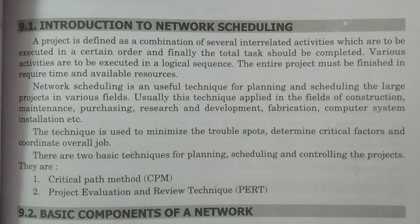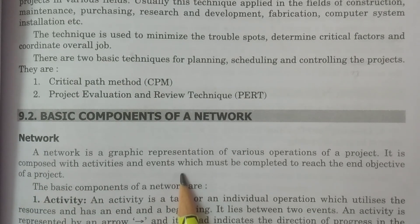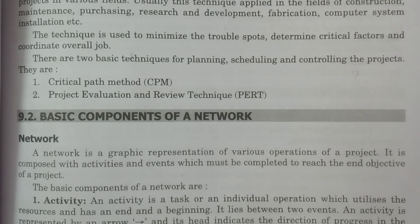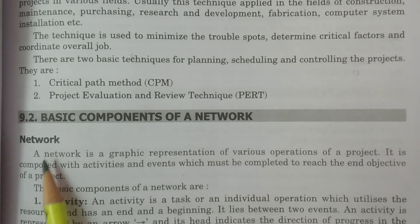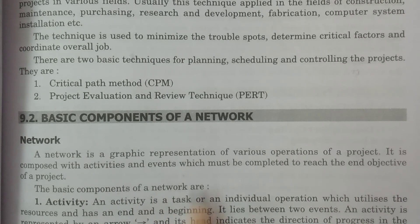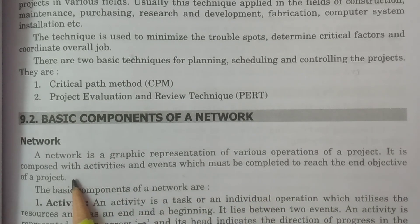This is the basic terminology. First is the network. A network is a graphical representation of various operations of a project — for example, floors of a building, electricity, water. It shows the order and sequence of operations. It is a graphical representation of various operations, events, and activities of the project.